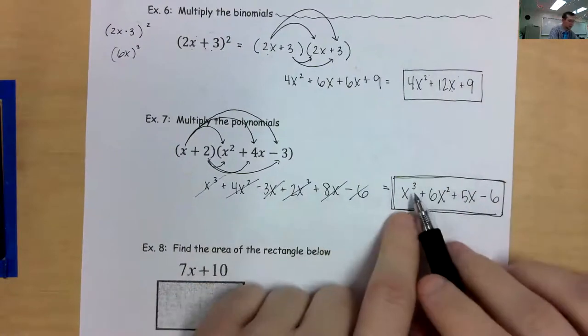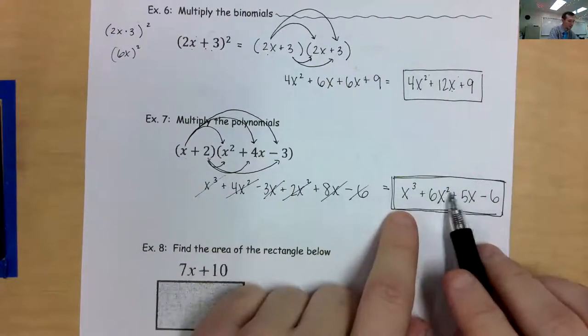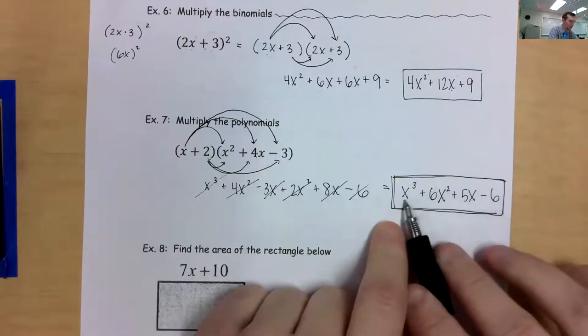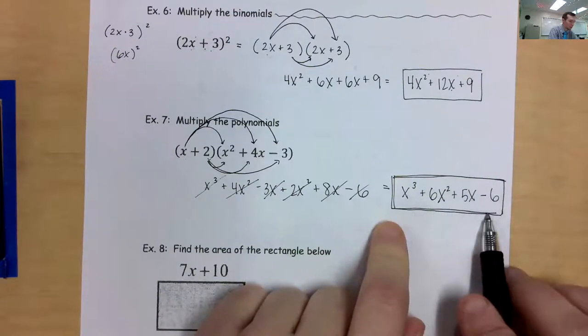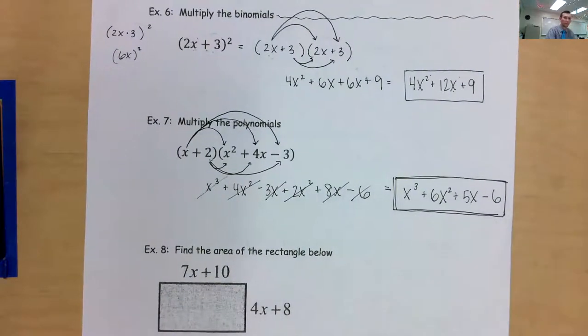Descending order — highest variable first, then the next highest, then the lowest, then no variable. And I have only one of each variable and exponent. That would be a perfectly written final answer.